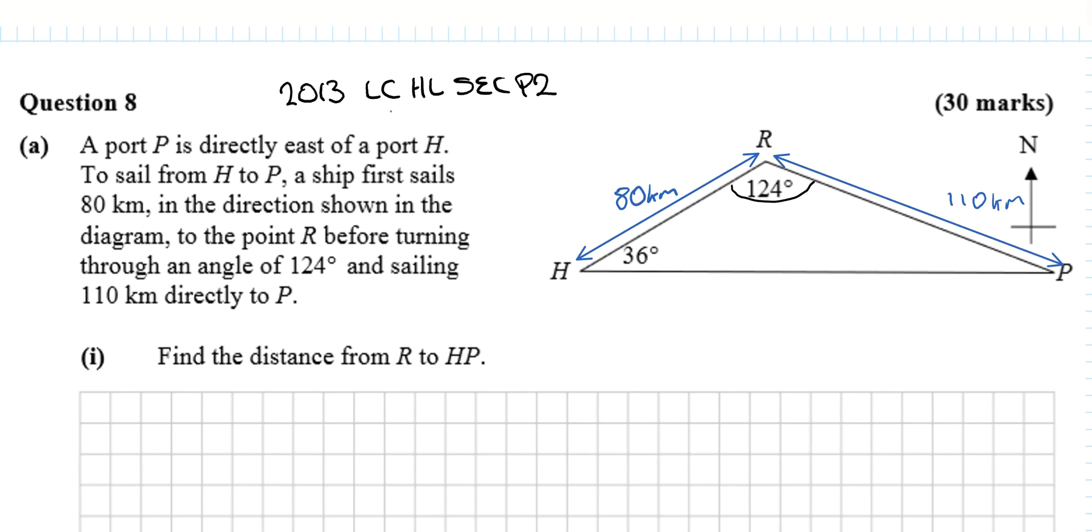The video covers 2013 Leaving Certificate Higher Level Maths Paper 2, Question 8. A port P is directly east of a port H, and a ship sails from H.